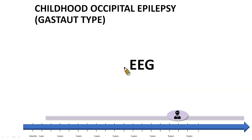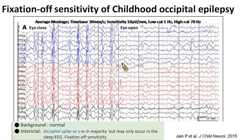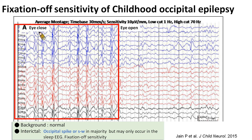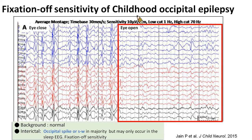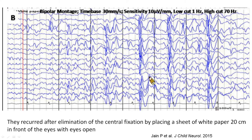Here is the EEG. The background is often normal. Occipital spike or spike-wave occurs in the majority but may only occur in the sleep EEG. Fixation sensitivity is a characteristic EEG finding in this syndrome. As highlighted by the red box, the epileptiform discharges persist throughout the eye-closed state, and later the discharges disappear with eye opening. However, the discharges recur after elimination of central fixation by placing a sheet of white paper in front of the eyes with eyes open.